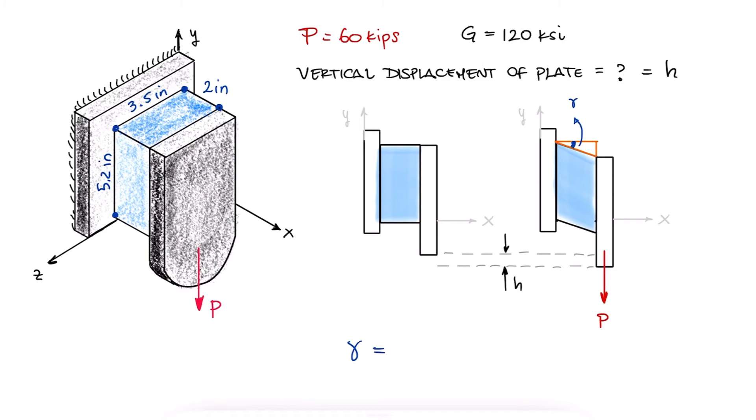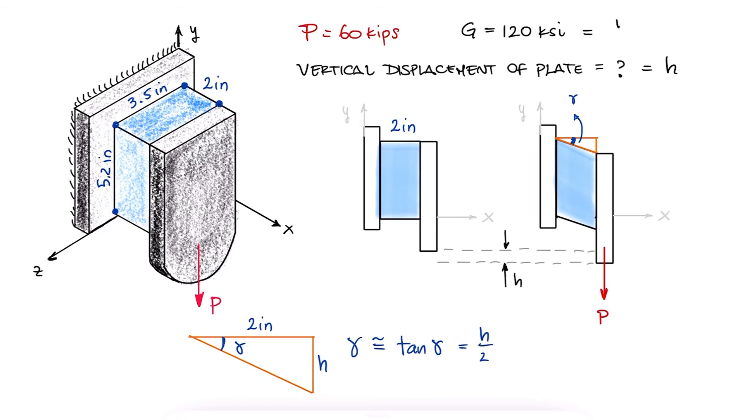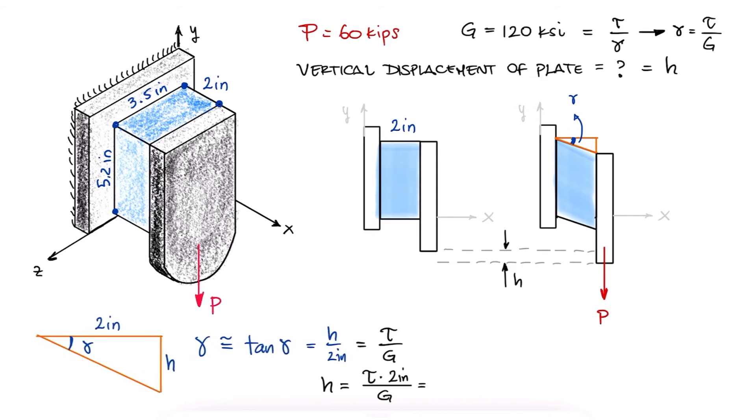Since the shear strain gamma is directly proportional to h, and we also know that gamma is the shearing stress over the modulus of rigidity, we can solve for the vertical displacement of the plate h.